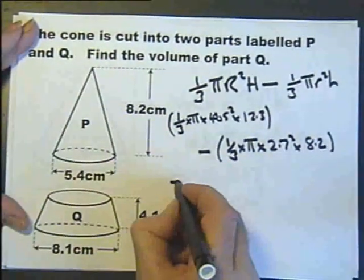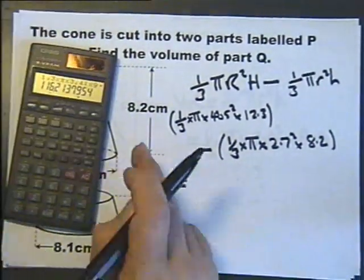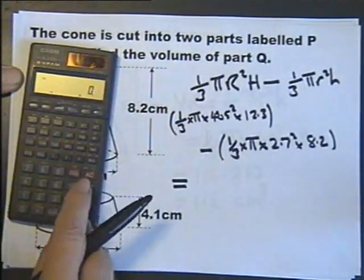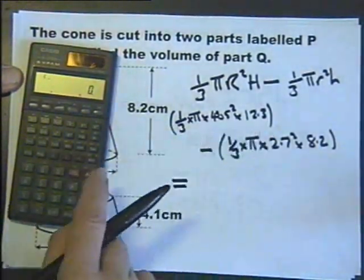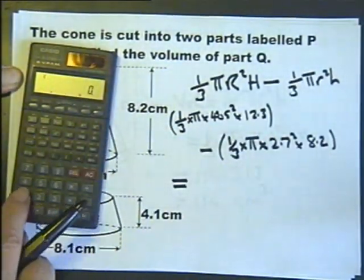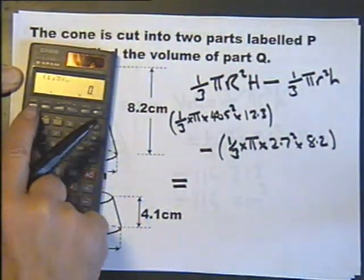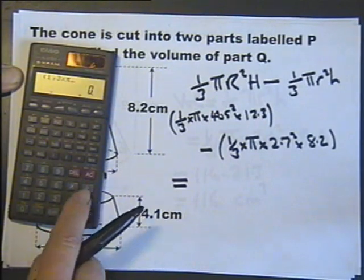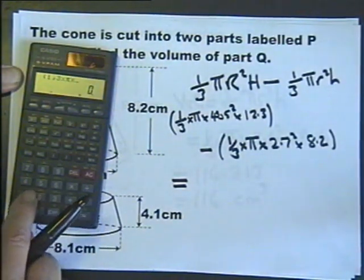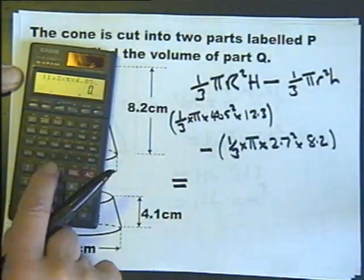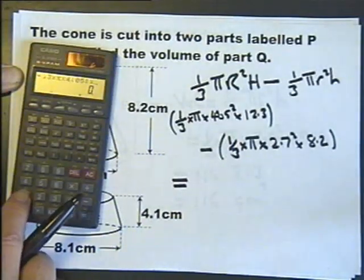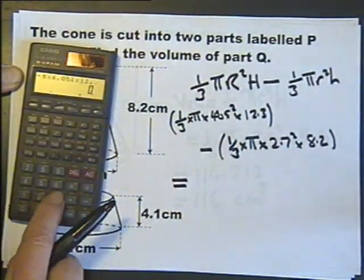So, it's a case of now pressing some buttons. So, I'll have a bracket, we'll use those brackets, third, fraction button three, multiplied by pi, multiplied by 4.05 squared, multiplied by 12.3, close brackets,